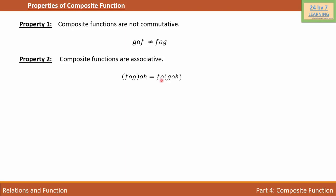It simply means that f of g of h is the same as f of g of h. Property 3: a function f: A tends to B and g: B tends to C are one-to-one, then g of f: A tends to C is also one-to-one.